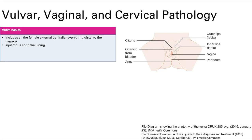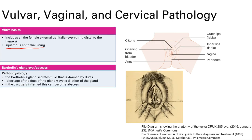Let's talk about the pathology of the female genital tract. We're going to start anatomically, outside in. The vulva is all the female external genitalia distal to the hymen and is lined by squamous epithelial lining — that's actually important.